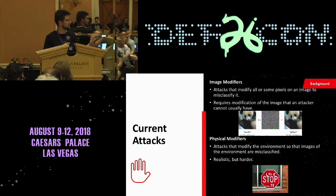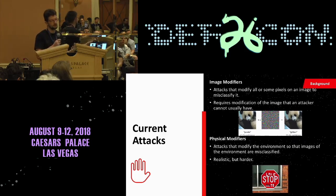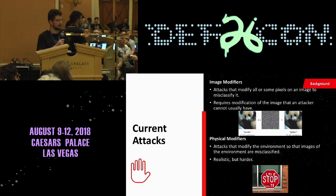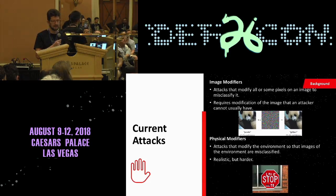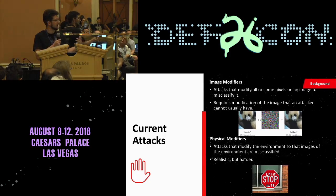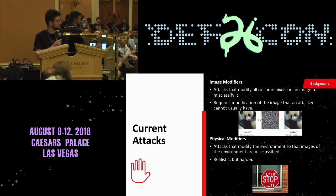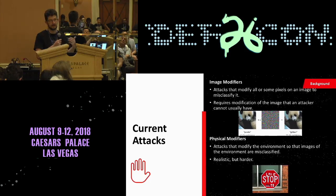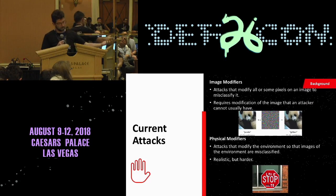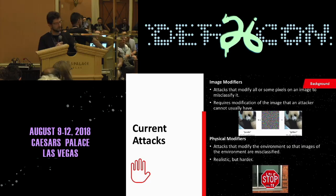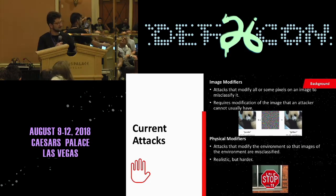The other type of attack against machine learning is the physical modification. What you can do is put a set of stickers on an object and have it misclassified. One of the first papers that did this was attacking a classifier on stop signs — because, you know, self-driving cars and stop signs. They came up with a way of producing pixel modifications as stickers on the stop sign to get it misclassified. There's some evidence that their attack does not work very well in real life and you need a poor classifier and a few other things to make it look like it works.